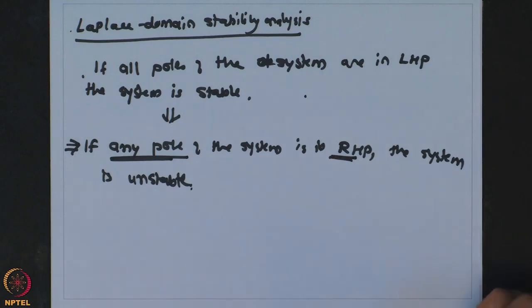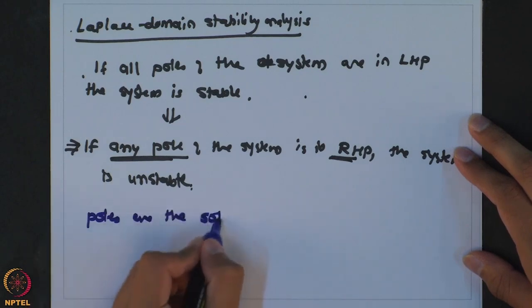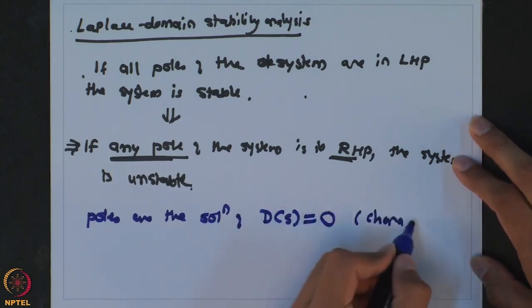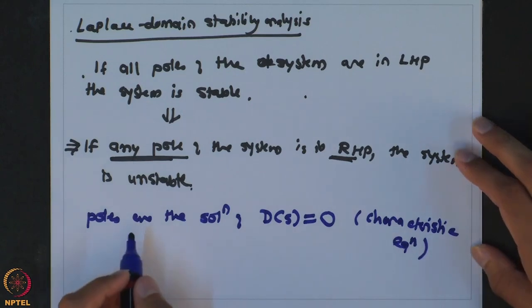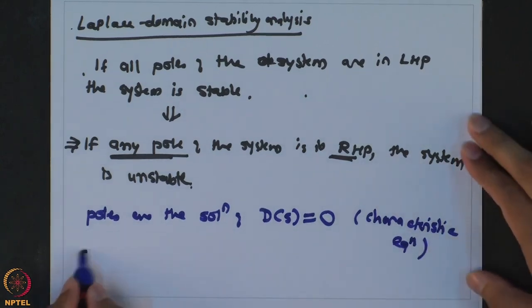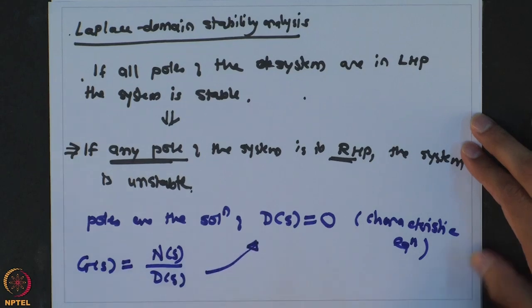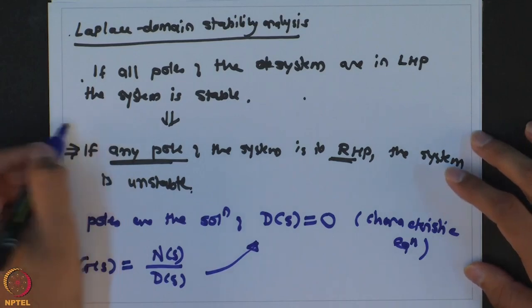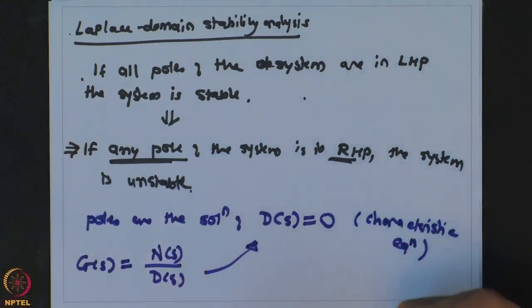How do we get poles of the system? Poles are the solutions of the equation D(s) = 0, also known as the characteristic equation. We write the transfer function G(s) as N(s)/D(s), set the denominator polynomial equal to zero, and the roots of that polynomial tell us the poles. Depending on the pole locations we know whether the system is stable or unstable. We will use the same logic to assess the stability of a feedback system.